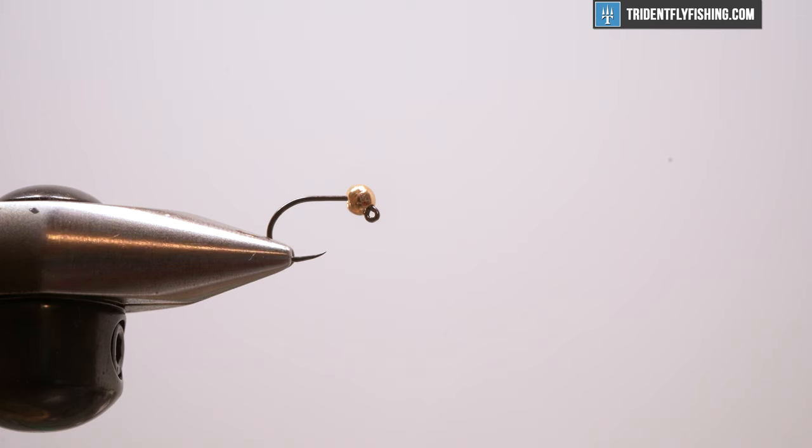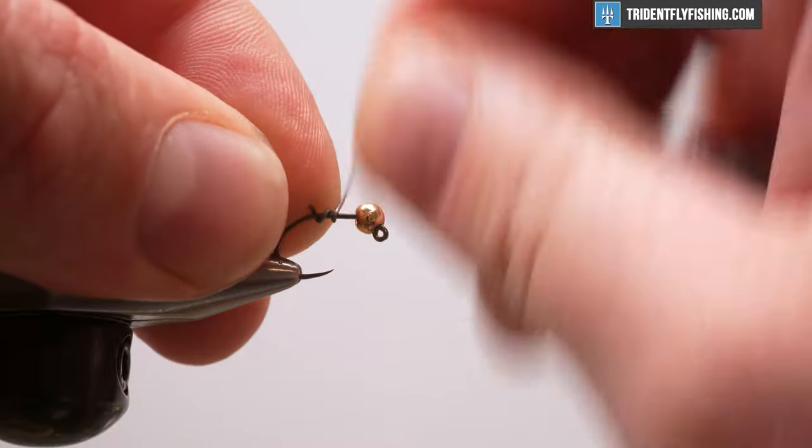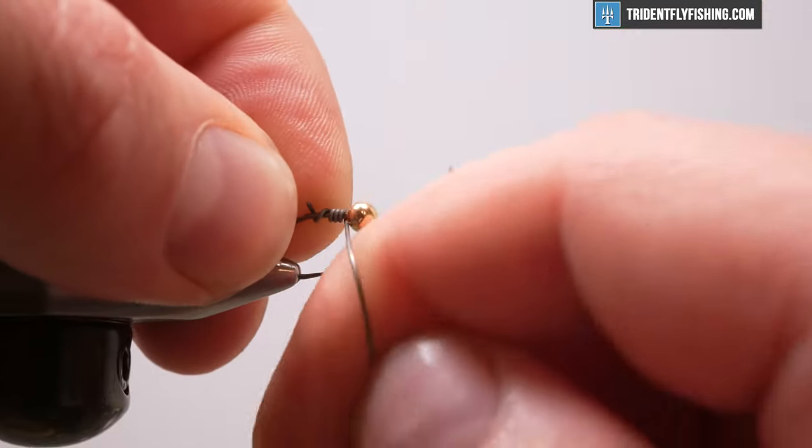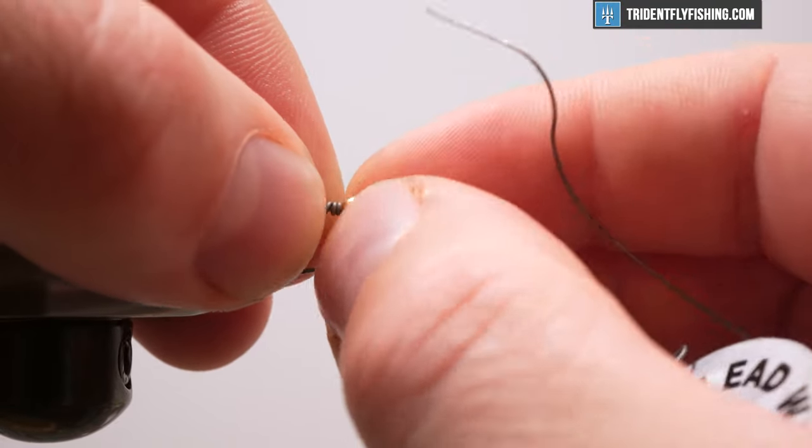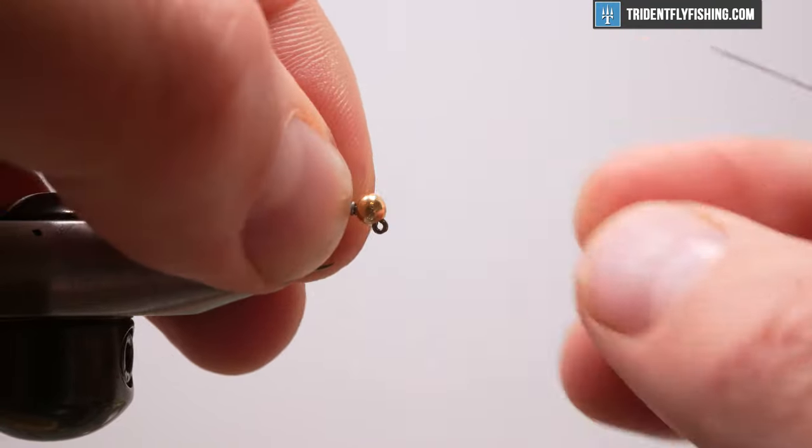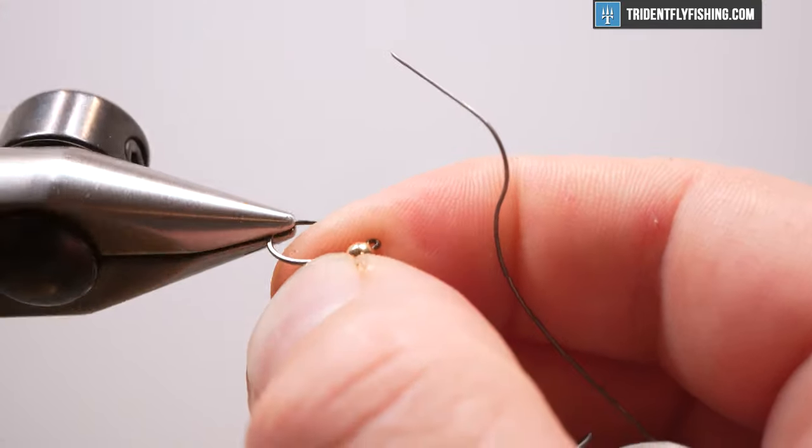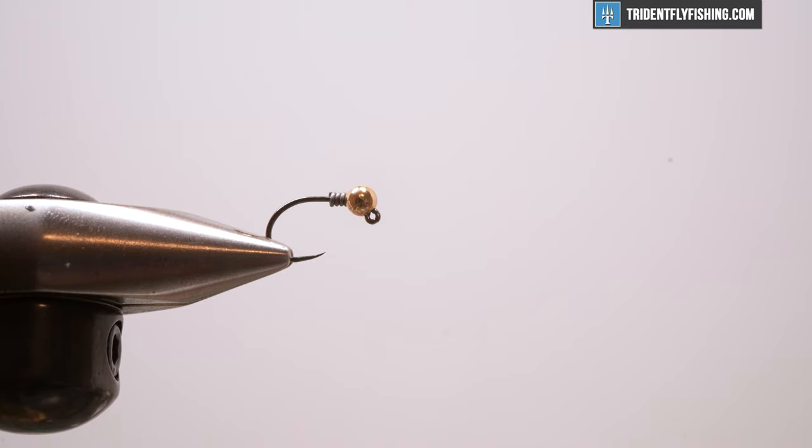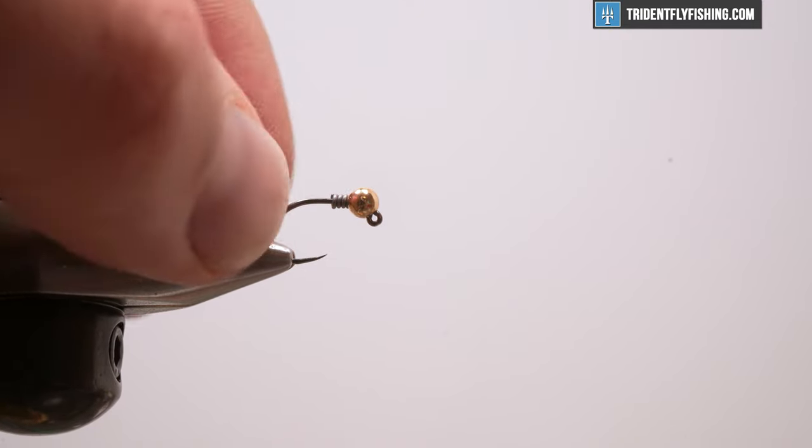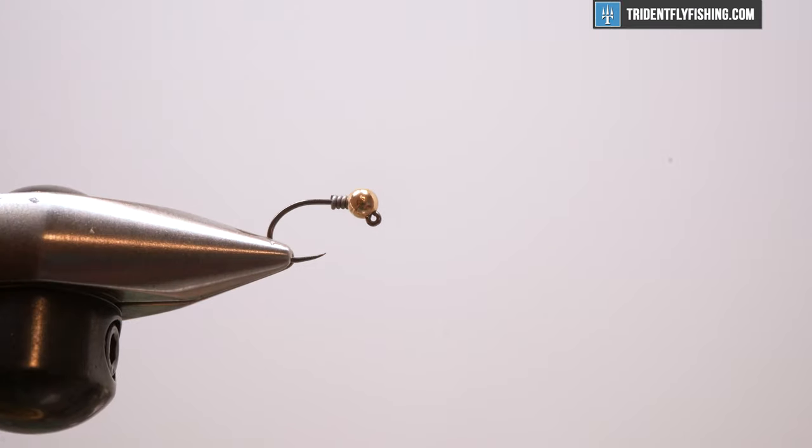The first thing I want to do, and this is optional but I like to do it, I'm just going to seat the bead with a little bit of lead wire. I have 0.20 lead wire. I'm just going to take a couple of wraps, and this is only going to seat my bead. I just have my bead oriented in the correct position and it's not going to go anywhere. This is also going to help a little bit with my taper.